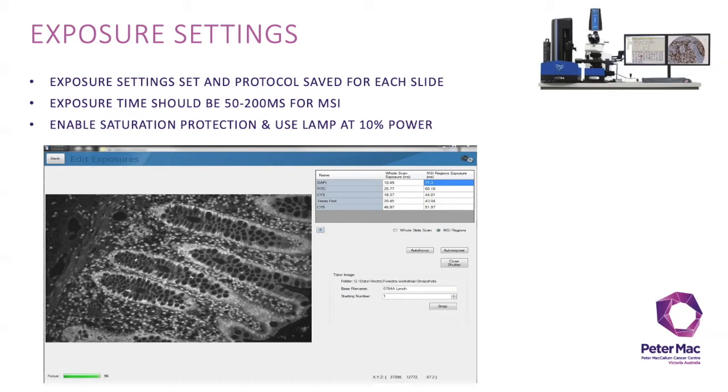The image shown on the bottom right is that of a colorectal tumor stained with an immune panel comprising seven markers. You can see that we have exposed in all the EpiCube filters and that the exposure times fall approximately within the desired range.